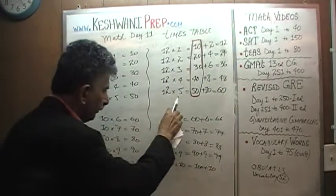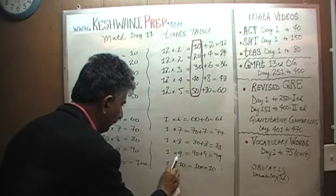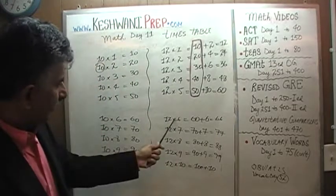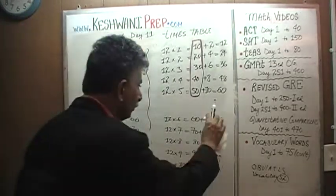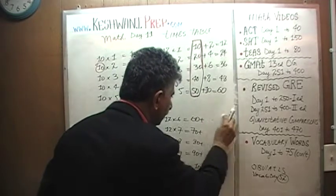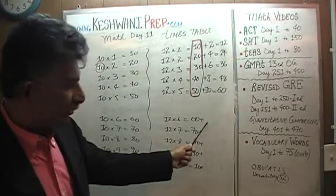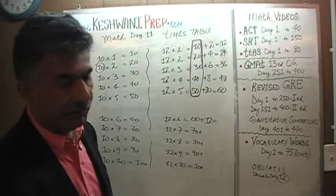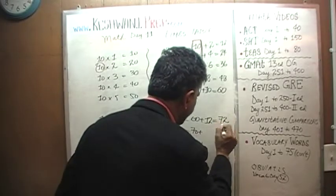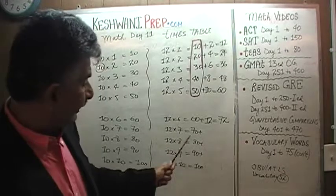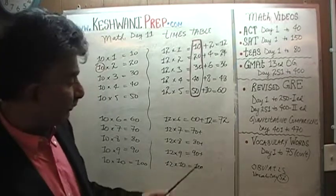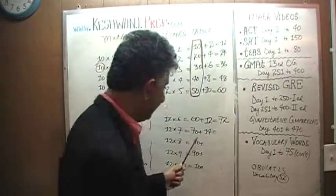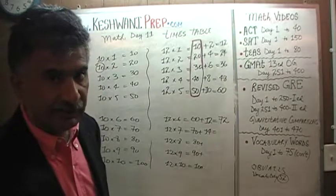Let's do these now. We are looking for the 12th table: 12 sixes are going to be 10 sixes which is 60, and two more sixes. Two sixes are 12, and 60 plus 12: 60 plus 10 is 70 plus two more is 72. 12 sevens are going to be 10 sevens which are 70 plus two more sevens which is 14. 70 plus 14 is 70 plus 10 which is 80, and 80 plus 4 is 84.